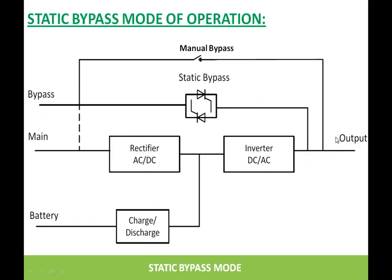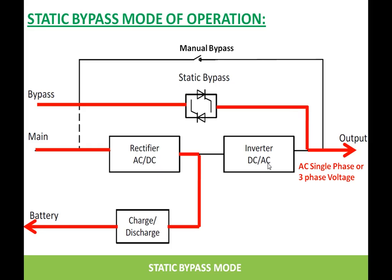The other mode is the static bypass mode. In this mode, the static bypass switch is used for providing the output. The UPS goes to this mode when the inverter fails or the inverter overloads. Inverter overload occurs when the load connected to the UPS draws more power than the capacity of the inverter. Under these conditions the UPS goes to this mode, and the power flows through the static bypass to the output. The battery bank is still in charging mode because the rectifier is in operation.